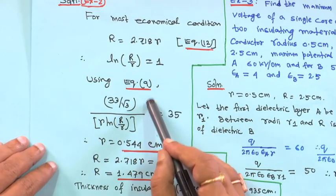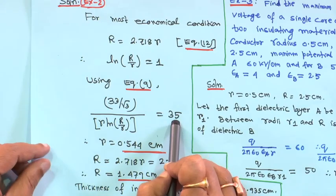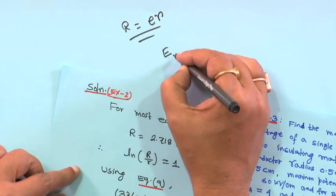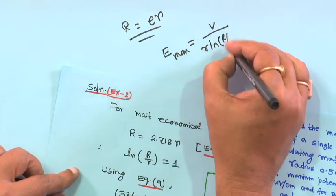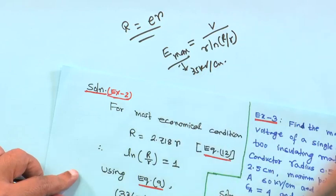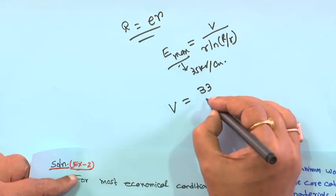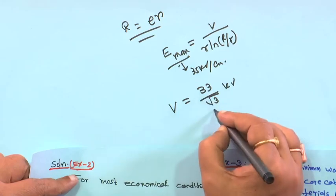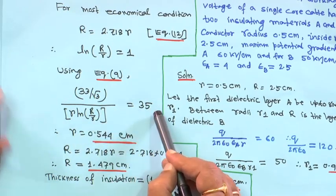Using equation 9, the maximum electric stress E_max is given as 35 kV per centimeter. The formula is E_max equals V divided by r times ln(R/r), where V is the line-to-neutral voltage. The line-to-line voltage is 33 kV, so the line-to-neutral voltage is 33 divided by root 3 kV. Therefore, 33 divided by root 3, divided by r times ln(R/r), equals 35.